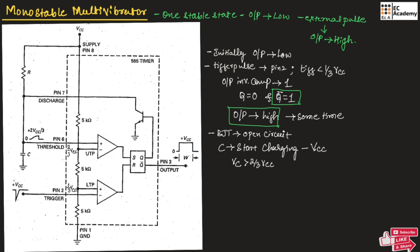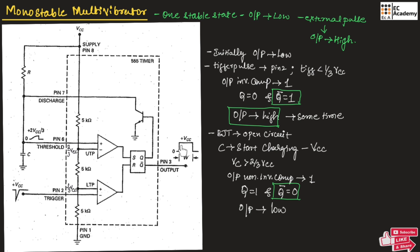Now the voltage across the capacitor will be greater than 2/3 VCC. Once the capacitor voltage exceeds 2/3 VCC, the output of the non-inverting comparator will be high. This will set the SR flip-flop, making Q equal to 1, and therefore Q-bar equal to 0. The output will move to low state. The output remains high for a period W equal to 1.1RC, where R and C are the component values connected in the circuit.